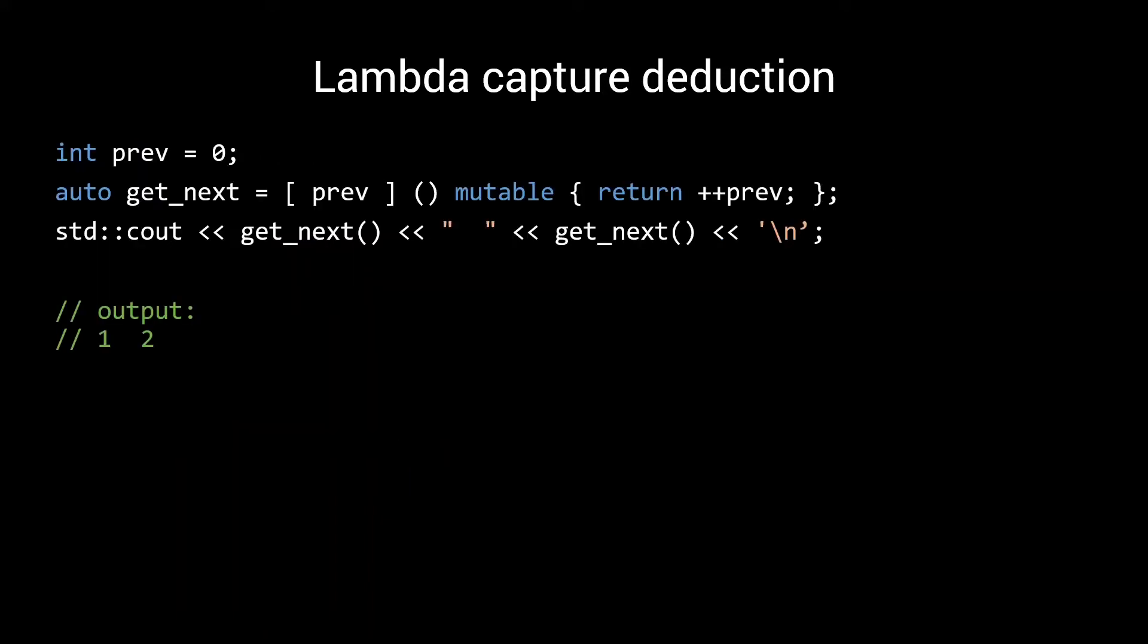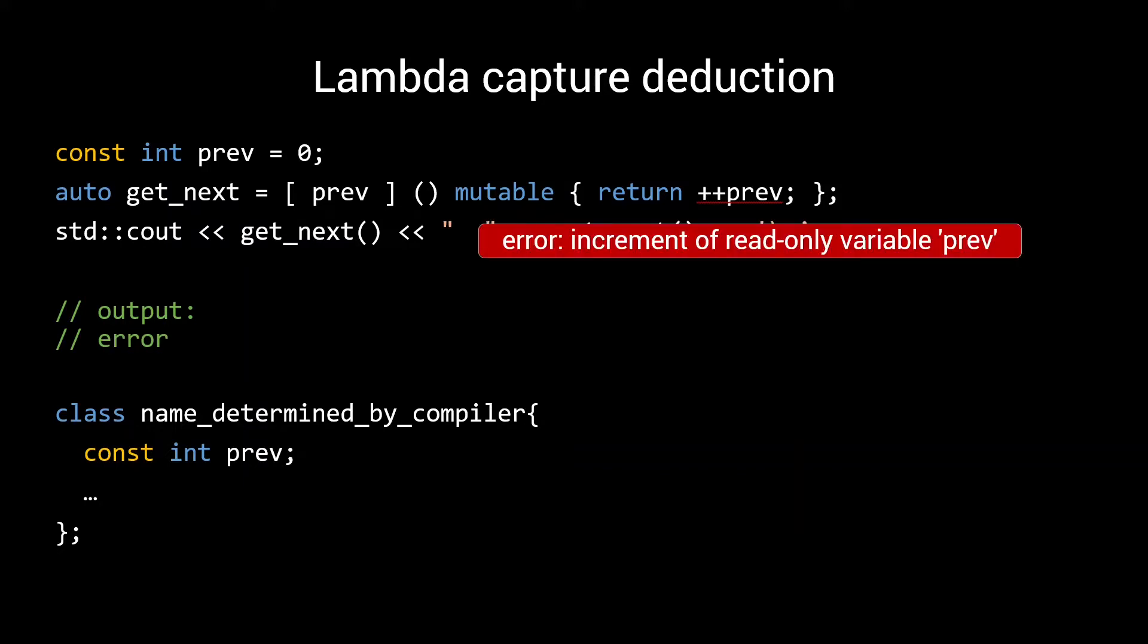Here I have a simple mutable lambda that returns a new, incremented value every time you call it. When the compiler comes across this lambda, it will generate a class, like this one, with a private member called pref. For the type of pref, it will use deduced type int. If however, we would have made our input pref a const int, like this, then, since const and volatile are retained when doing lambda capture deduction, the private member pref will also be of type const int. Meaning that we get a compilation error when trying to increment our pref.